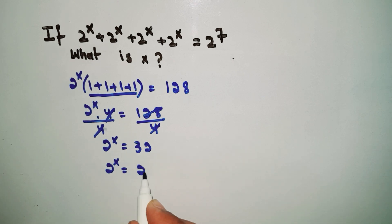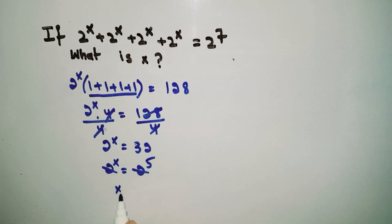32 is 2^5, so when bases are the same we just equate the powers. So x equals 5. The value of x equals 5. This is our answer.